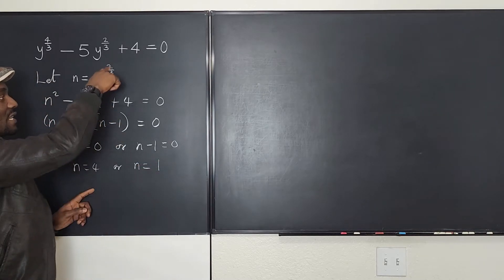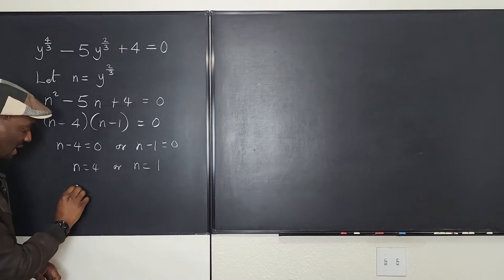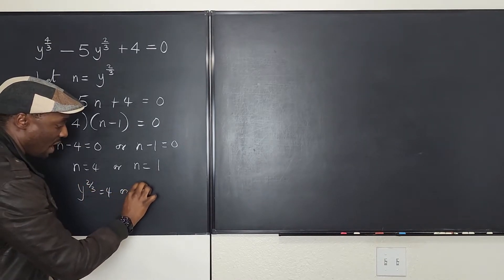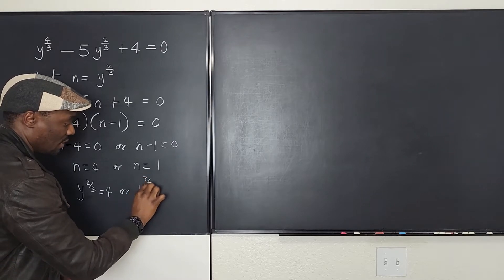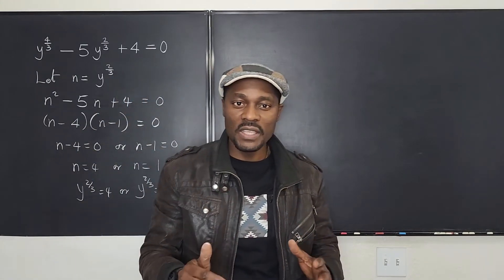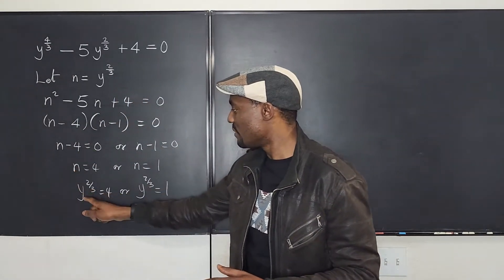But we know that n is y to the two-thirds. So we do the replacement and say y to the two-thirds equals 4 or y to the two-thirds is equal to 1. Remember, we are not looking for n, we're looking for y.